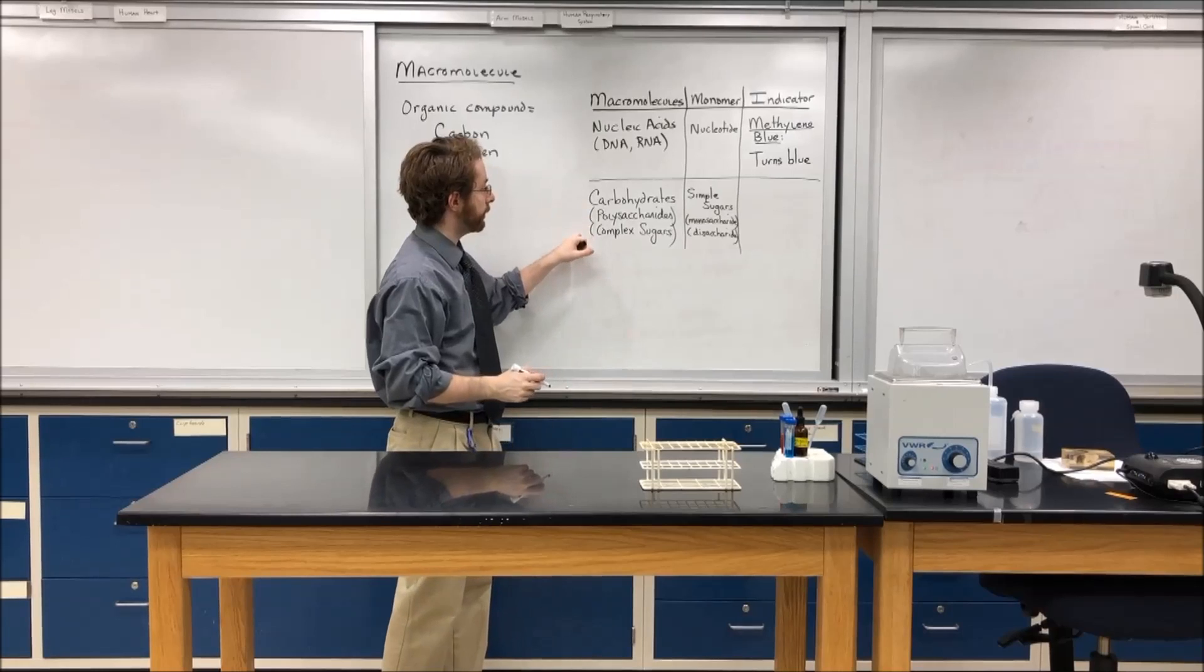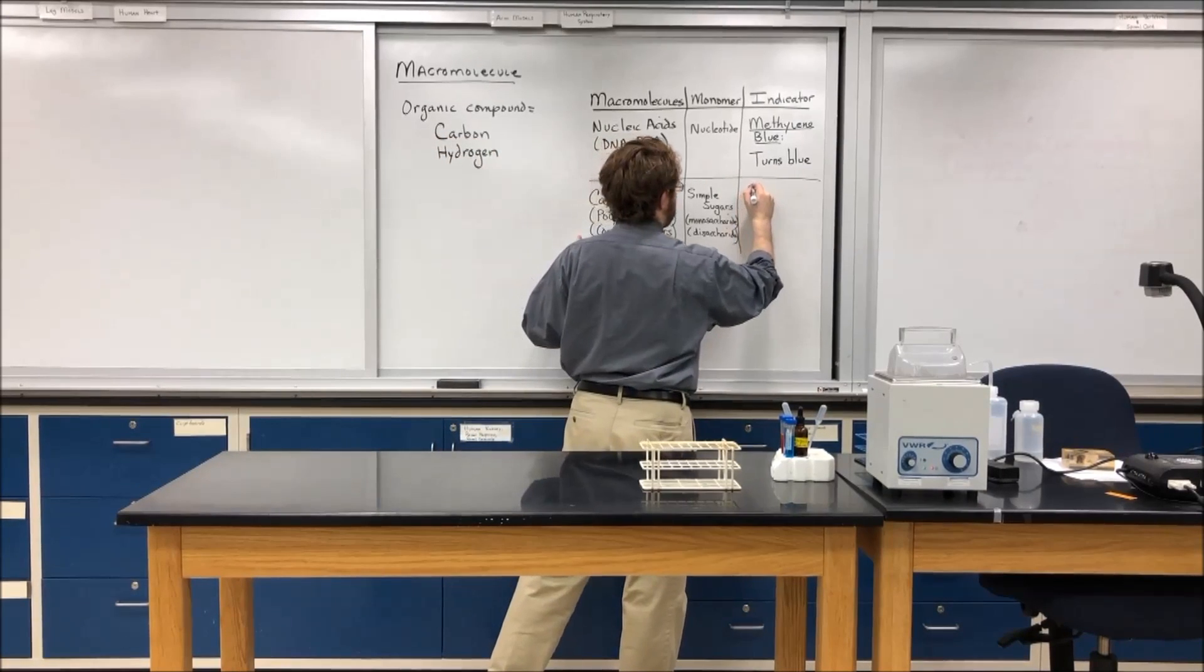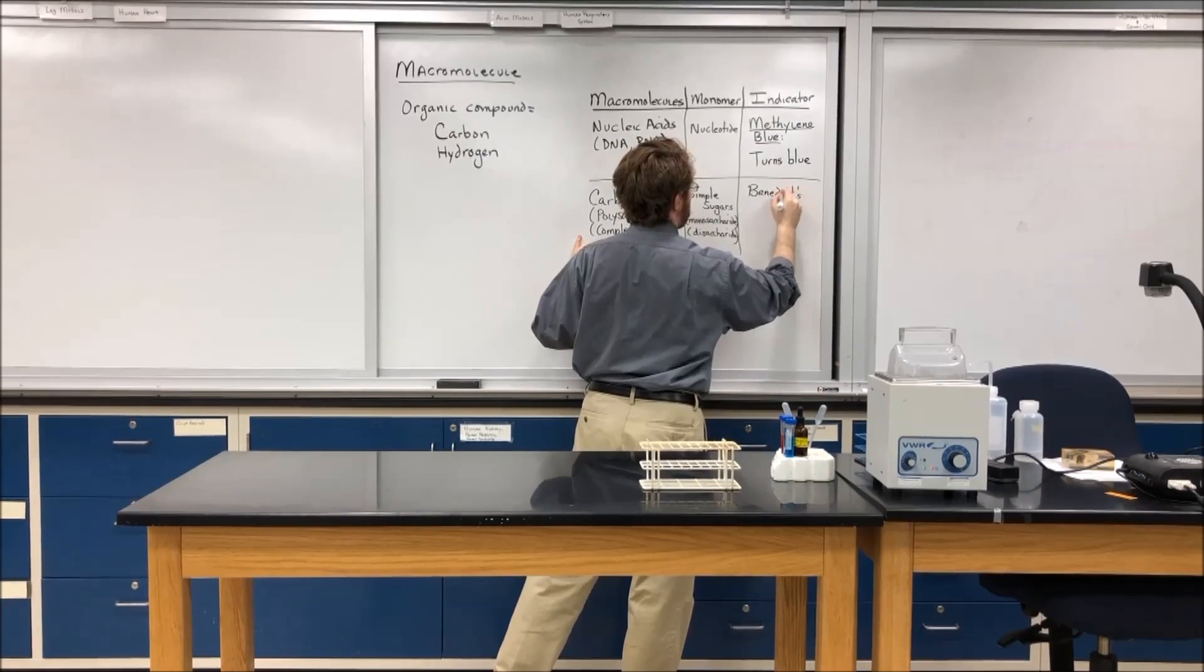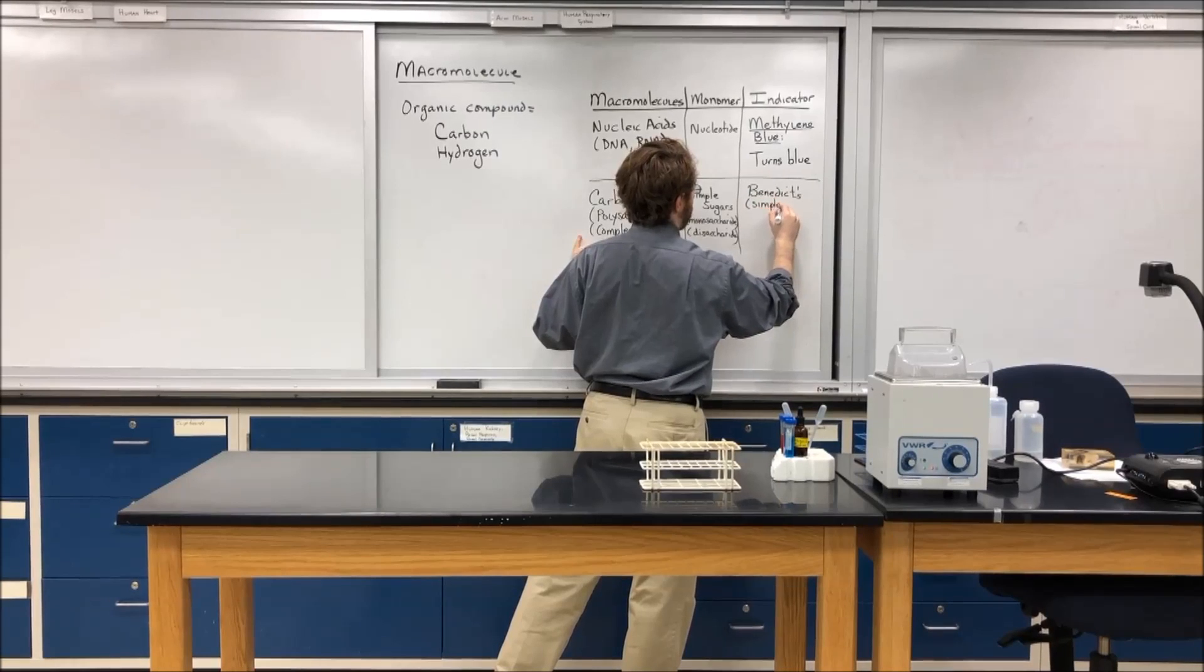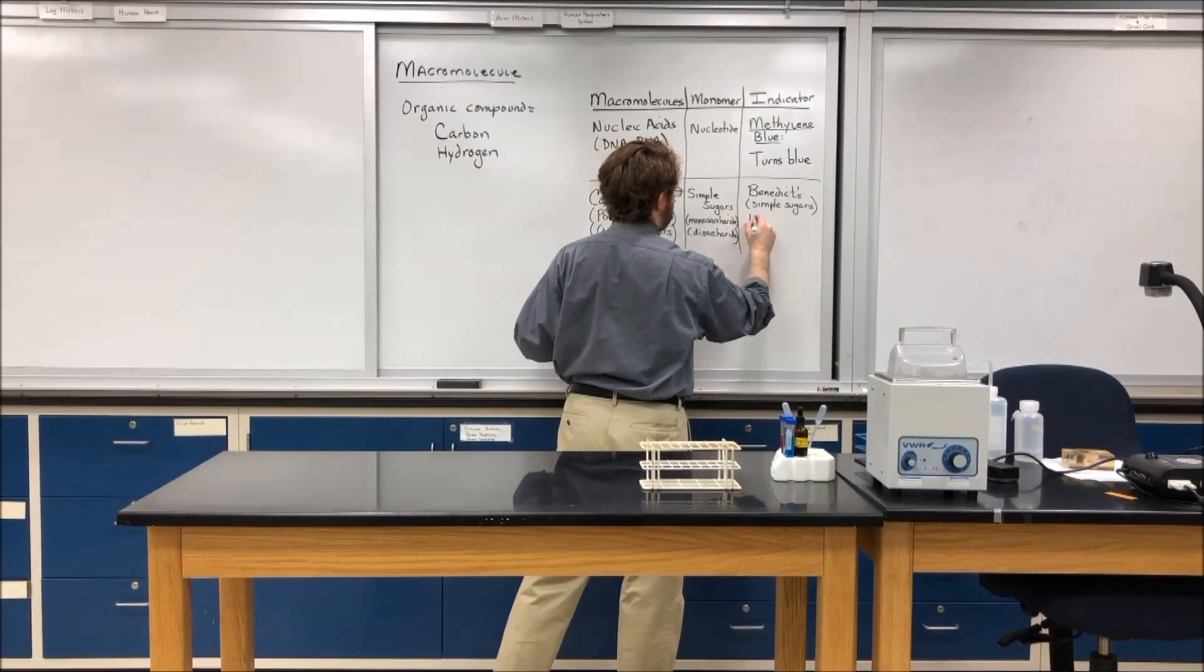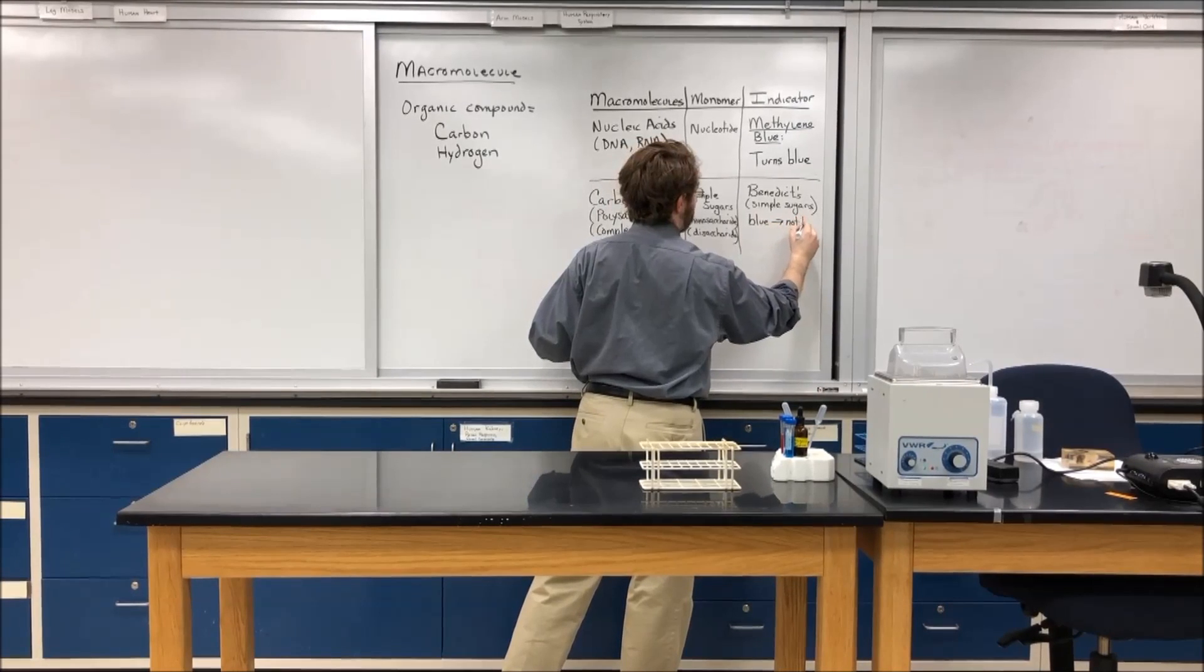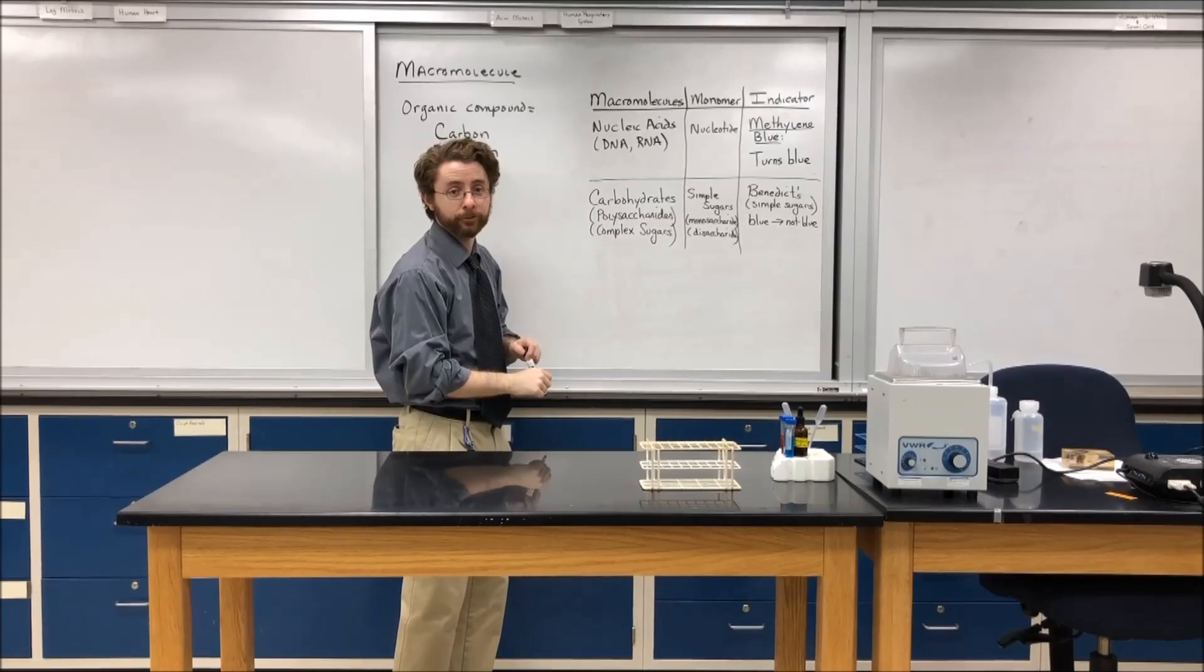And there are two indicators that you can use for carbohydrates. One is called Benedict's reagent. And Benedict's is what we use for the simple sugars. Benedict's is a blue solution. And if it turns from blue to any other color, so not blue, then simple sugars are present.